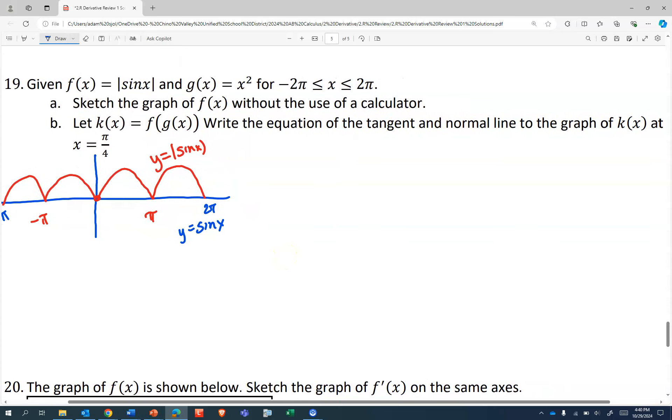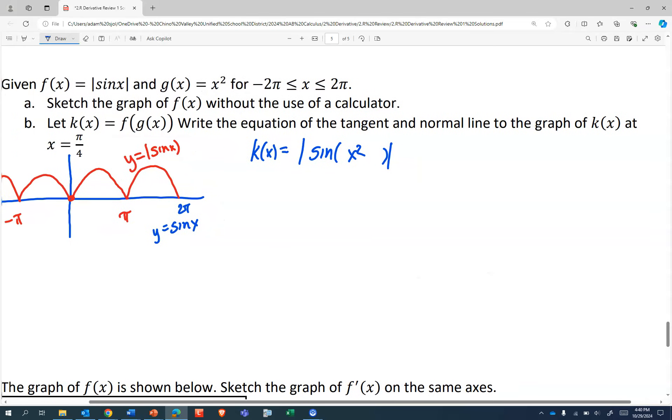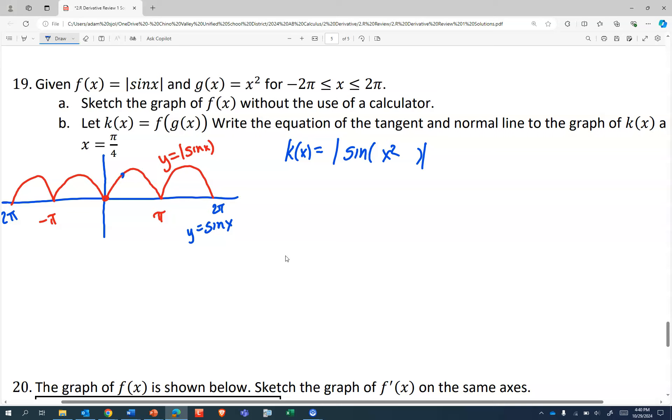So k is f(g(x)). Let's see, k(x) is f, which is the absolute value of sin of something. And that something is x². And tangent and normal line to k at x equals π/4.